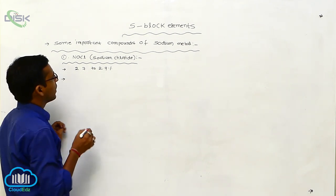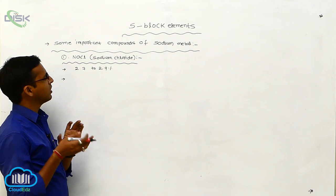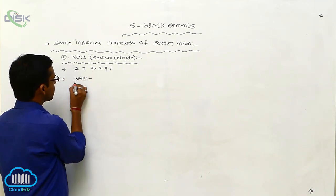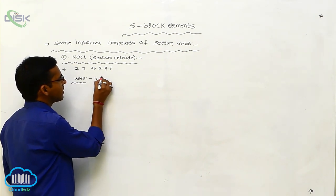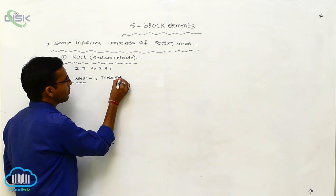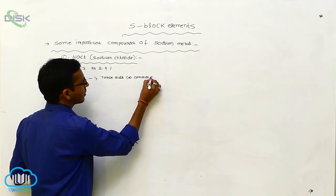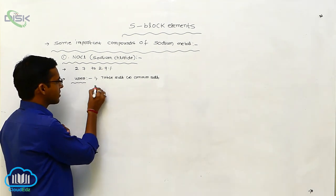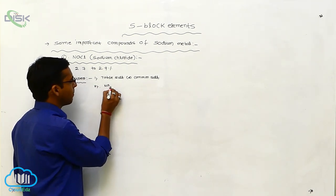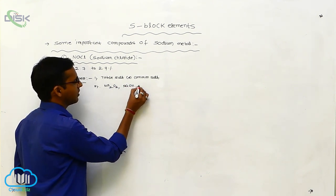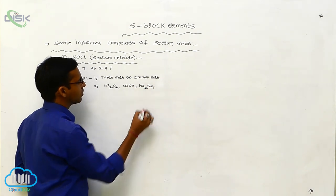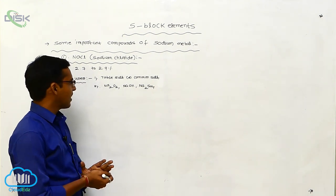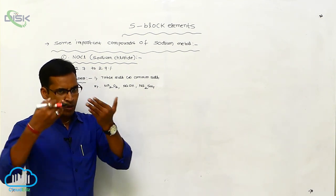Sodium chloride has some special properties compared to other chlorides like potassium chloride or aluminium chloride. The uses of sodium chloride: it is commonly called table salt or common salt, and it is used for domestic purposes. By using sodium chloride we can also prepare sodium peroxide, sodium hydroxide, and sodium sulfate.